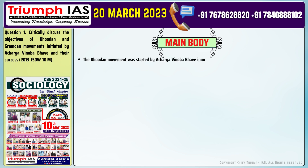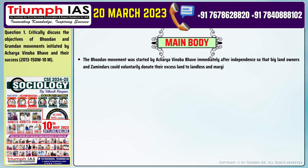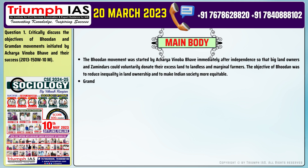Point 1: The Bhudan movement was started by Acharya Vinoba Bhave immediately after independence so that big landowners and zamindars could voluntarily donate their excess land to landless and marginal farmers. The objective of Bhudan was to reduce inequality in land ownership and to make Indian society more equitable.